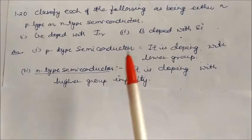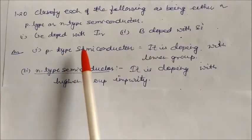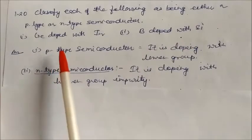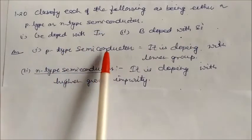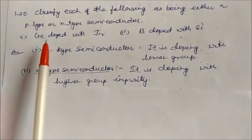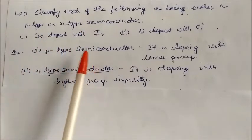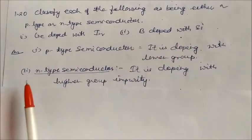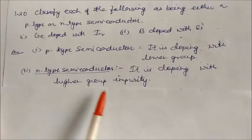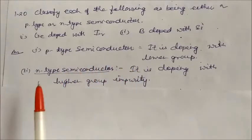Classify each compound as P-type or N-type semiconductor. When germanium is doped with indium (group 13), it is a P-type semiconductor because indium is a lower group element than germanium (group 14). When silicon is doped with boron, it is an N-type semiconductor because boron is from a higher group, introducing extra electrons and making the current carriers negatively charged.